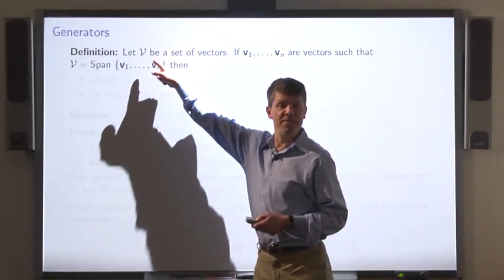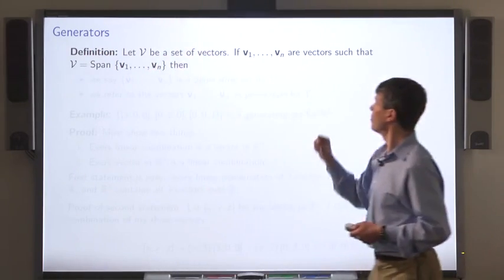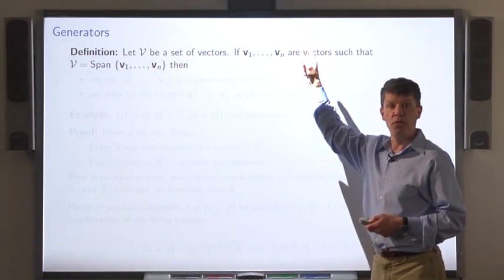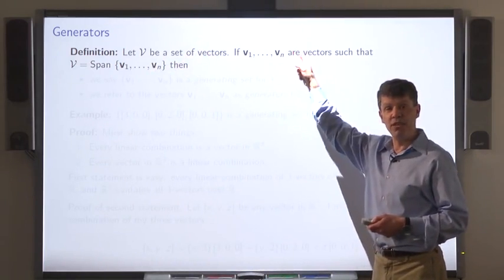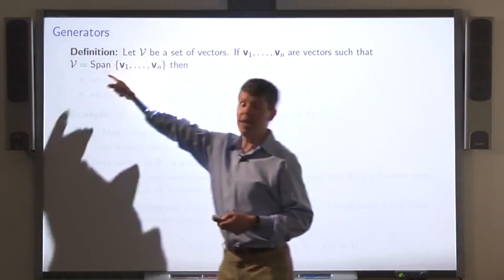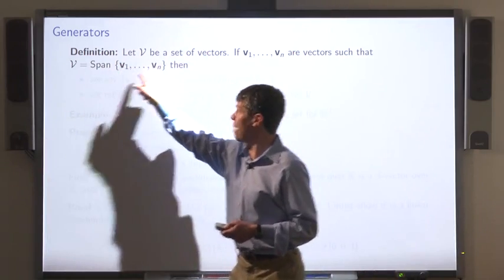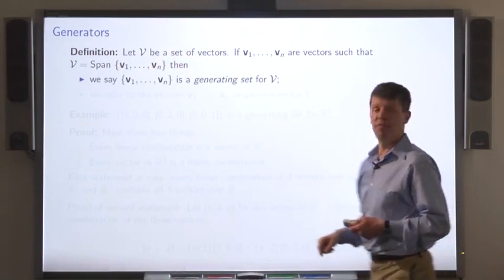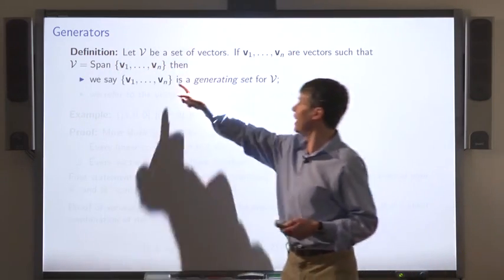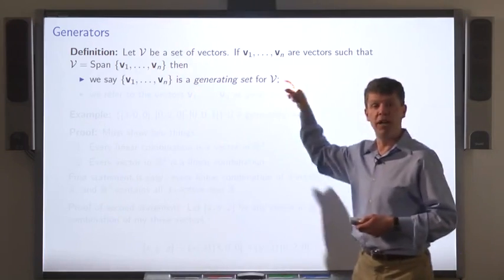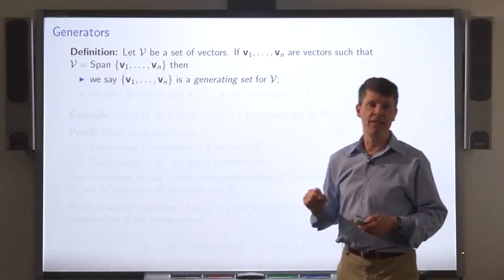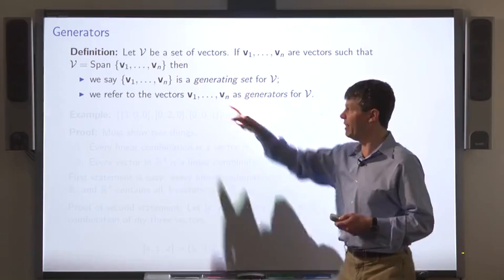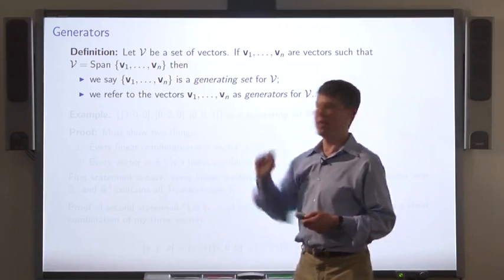Let big V be a set of vectors. If V1 through Vn are vectors such that big V equals the span of V1 through Vn, we say that V1 through Vn form a generating set for big V. We refer to these as generators.